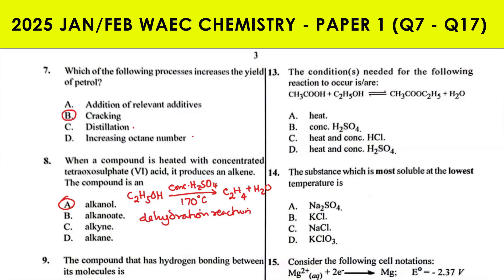This reaction can also occur in a different way. The alkanol and concentrated H₂SO₄ can also react to give us an alkoxy alkane and water. It's still a dehydration reaction, but in that case the alcohol will be in excess.